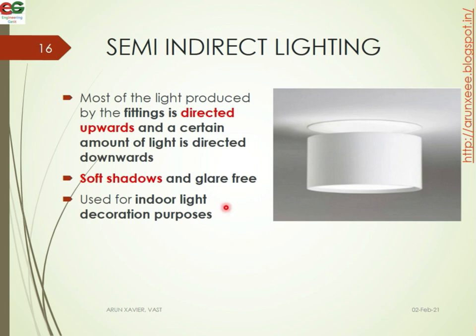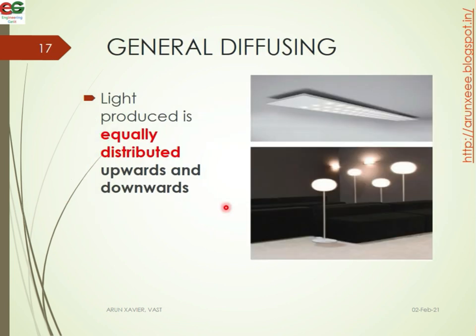In general diffusing lighting, light is equally distributed upward and downward — 50% upwards and 50% downwards. This produces an evenly diffused type of illumination throughout the space.